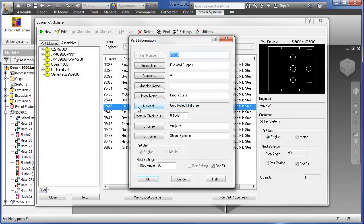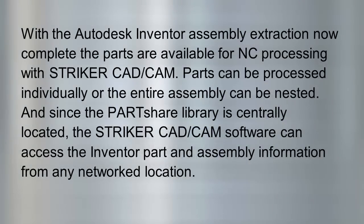Editing one of the assembly parts shows the parameters that were extracted from the Autodesk Inventor model. With the Autodesk Inventor assembly extraction now complete, the parts are available for NC processing with Striker CAD-CAM. Parts can be processed individually, or the entire assembly can be nested. And since the PartShare library is centrally located, the Striker CAD-CAM software can access the Inventor part and assembly information from any networked location.